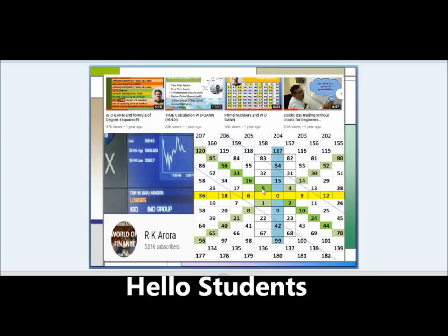Hello students, how are you? This video is in continuation of a series of videos on Hexagon Chart. When we talk about W.D. Gann, we talk about Square of Nine. Square of Nine is an ocean - the more you dive in, the more you will get the pearls and gems.